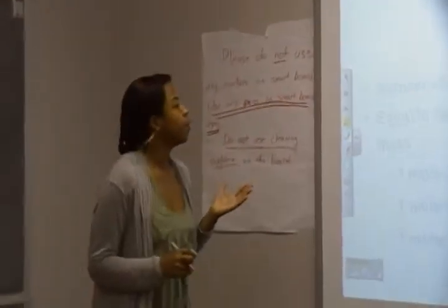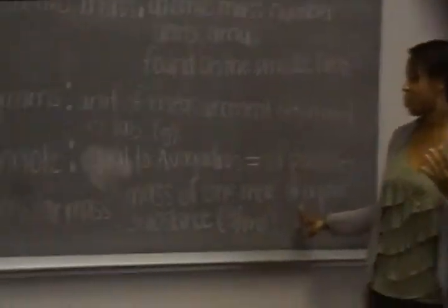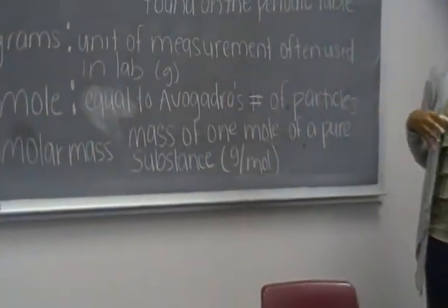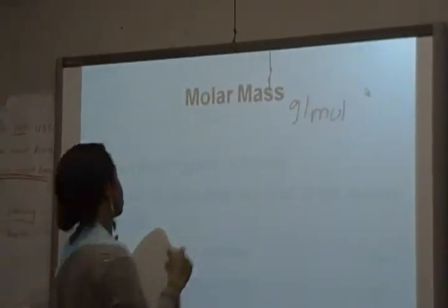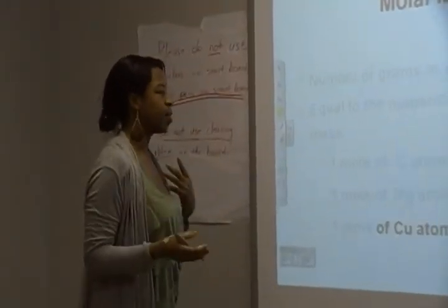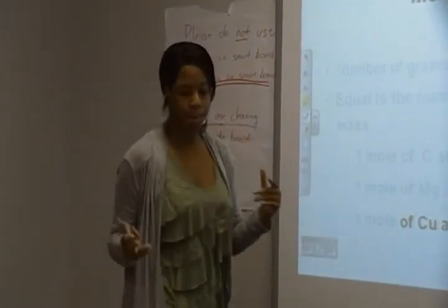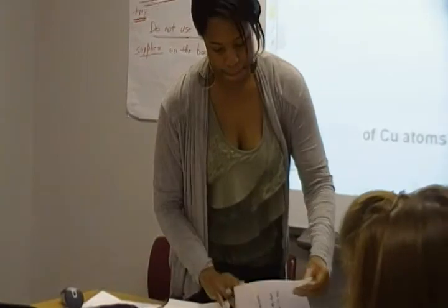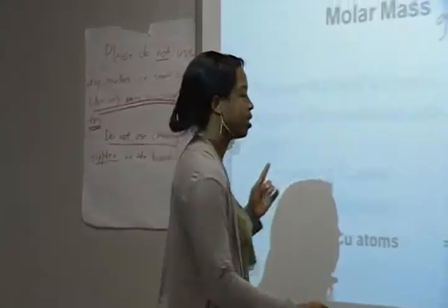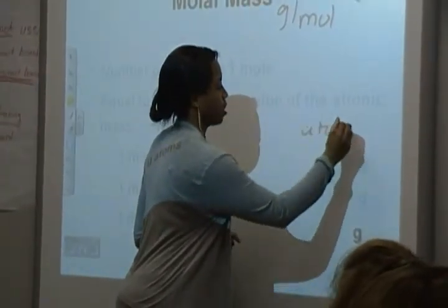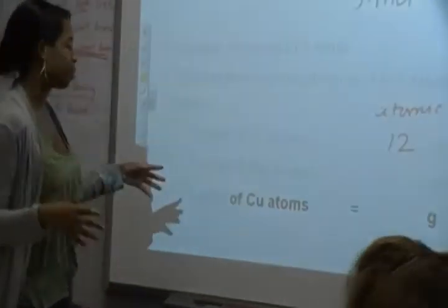The molar mass is equal to the number of grams in 1 mole. Molar mass is the mass of 1 mole of a pure substance, remembering that molar mass is measured in grams per mole. It's also equal to the numerical value of the atomic mass. So 1 mole of carbon atoms is equal to how many grams? It would just be equal to the atomic mass — 12 grams.